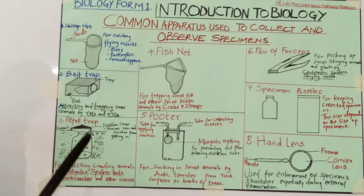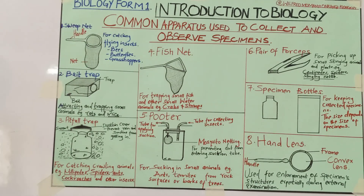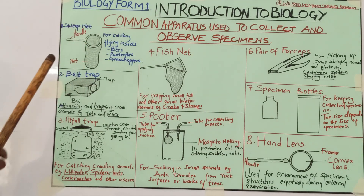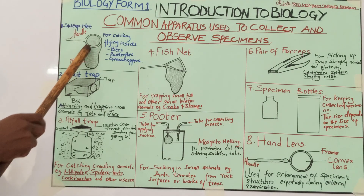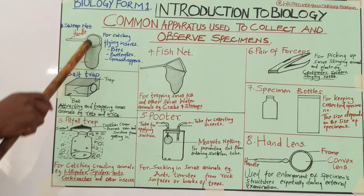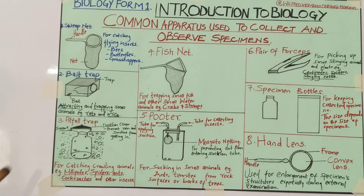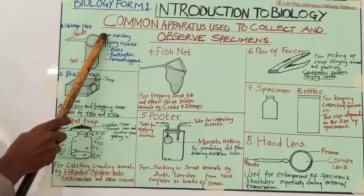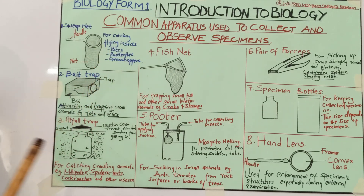Number one is the sweep net. The sweep net has a needle, it has legs, and there is a place where the specimen will enter. The sweep net is used for catching flying insects.